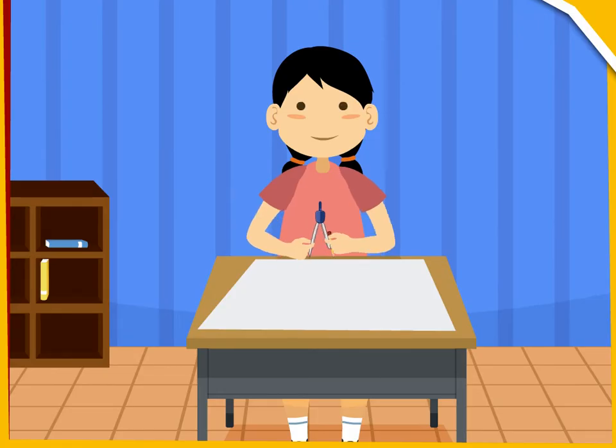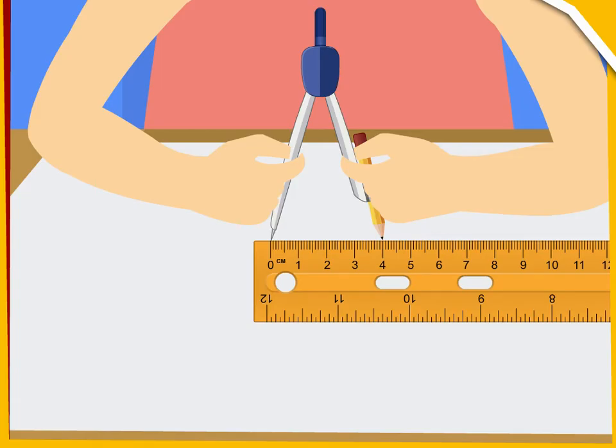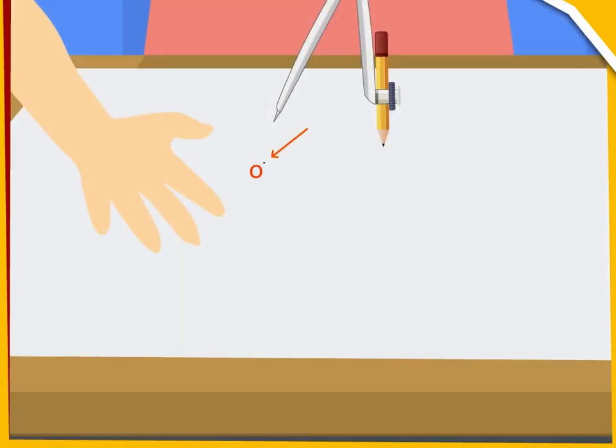Now, she opens the two arms of the compasses, keeping the metal end of the compasses at the zero mark of the ruler and the pencil tip at the four centimetre mark on the ruler. On a sheet of paper, she marks a point O.